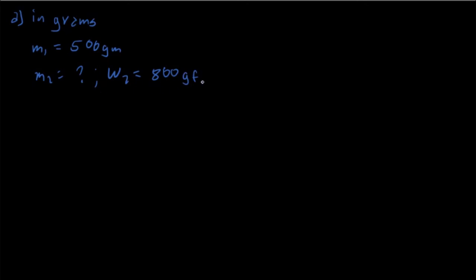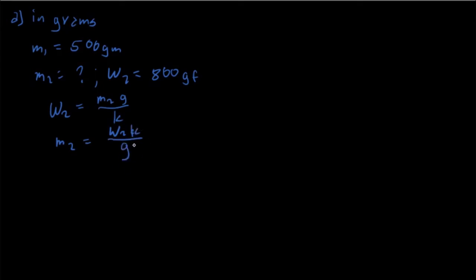Using the formula w = m·g/k, and solving for m2, we get m2 = w2·k/g. We need to establish our g first. The given g is 30.5 feet per second squared, and we need to convert this into centimeters per second squared.